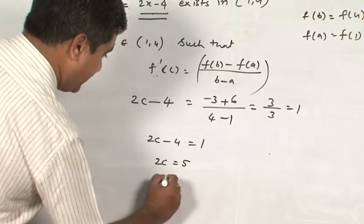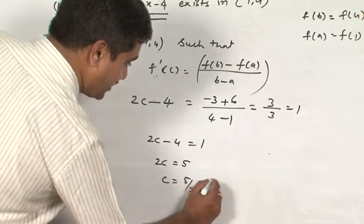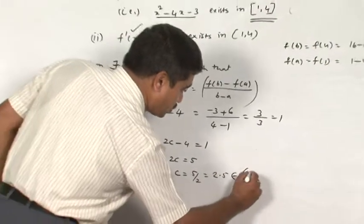2c is equal to 5, c is equal to 5 by 2, which is 2.5, which belongs very much in the interval (1, 4).